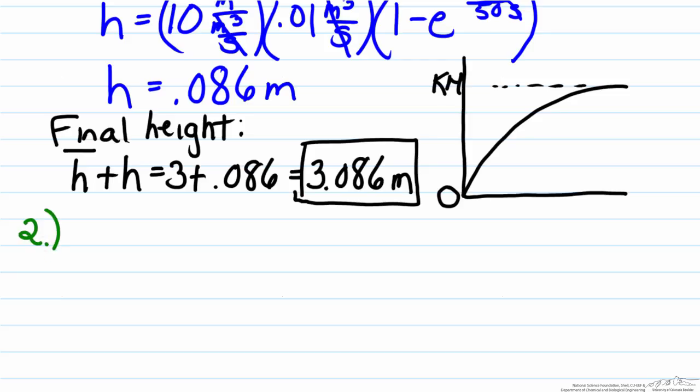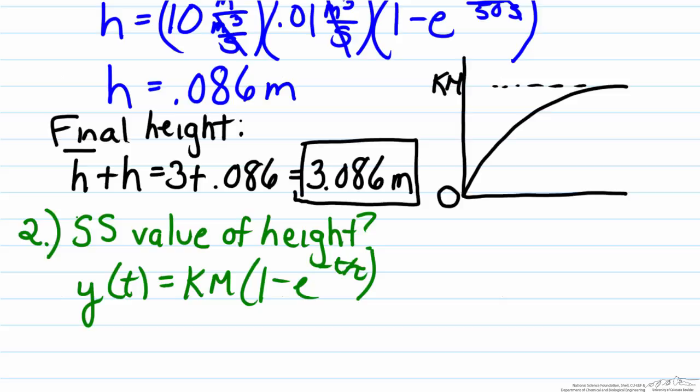The second part asks what will the steady state value be for the height. And if you recall from our analysis before is that as t goes to infinity the exponential term goes to zero.